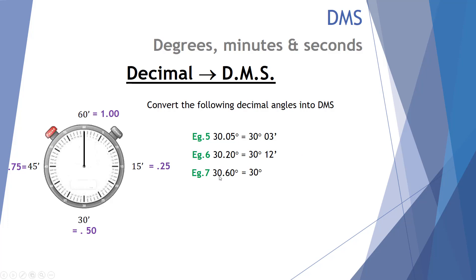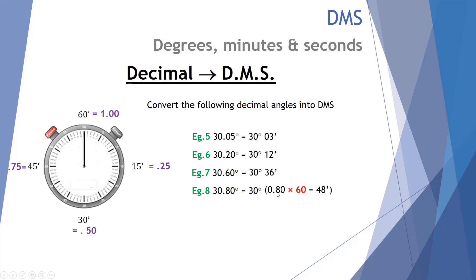Example seven: 30.60 degrees. That's 30 degrees, and 0.6 times 60 gives 36 minutes — so 30 degrees and 36 minutes. Example eight: 30.8 degrees. 0.8 times 60 is 48 minutes. So 30.8 degrees equals 30 degrees and 48 minutes.